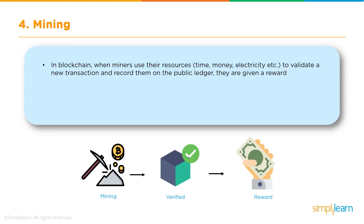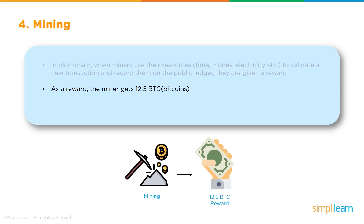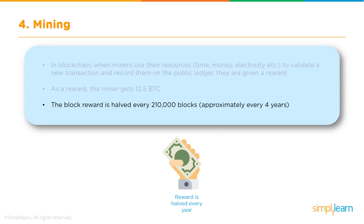When miners use their resources — time, money, electricity — to validate a new transaction and record it on the public ledger, they are given a reward in bitcoins. As of the time of this video, that reward stands at 12.5 bitcoins, and there is no other way bitcoins can be generated in a Bitcoin network — only through mining. The Bitcoin network internally halves the reward after every 21,000 blocks, approximately every four years, so subsequently the mining reward will reduce to 6.25 BTC.